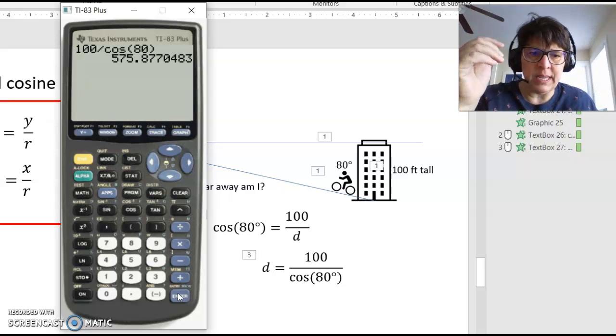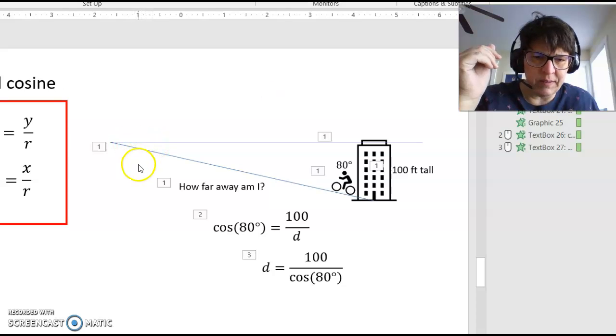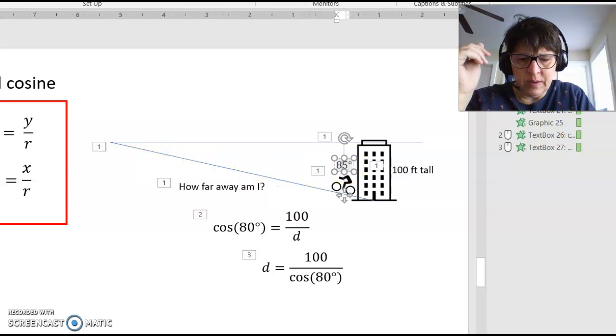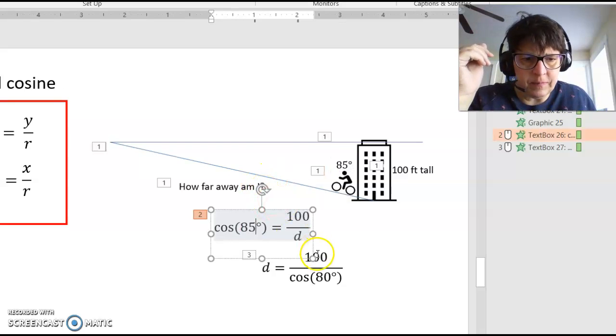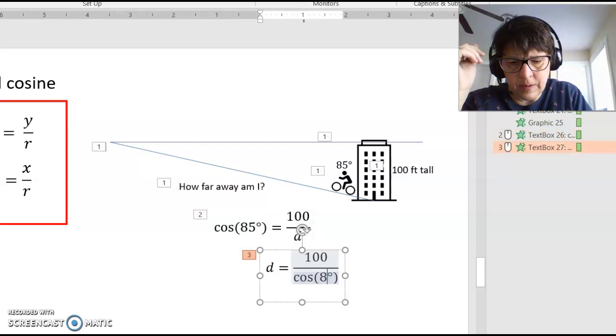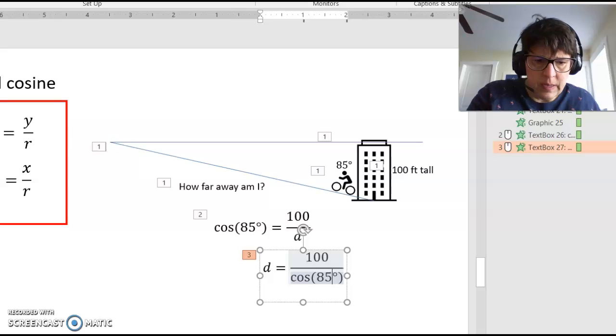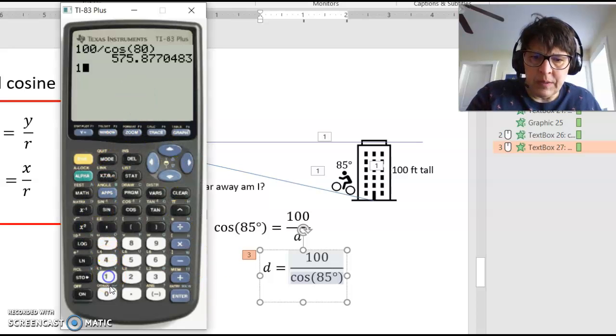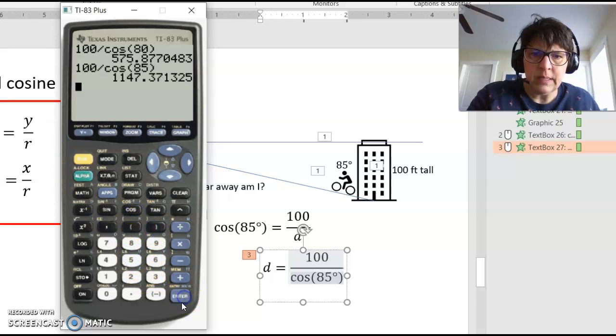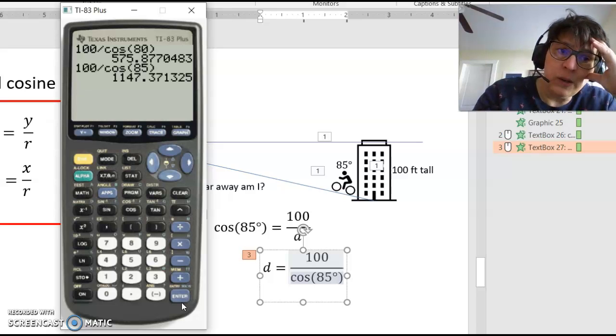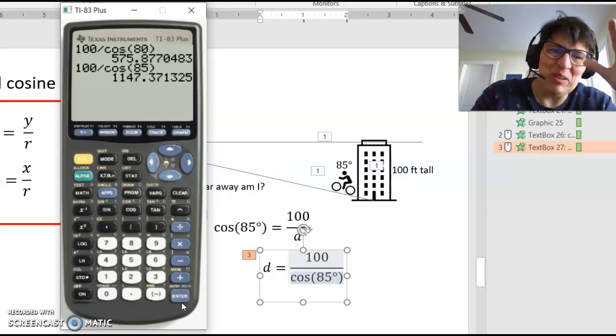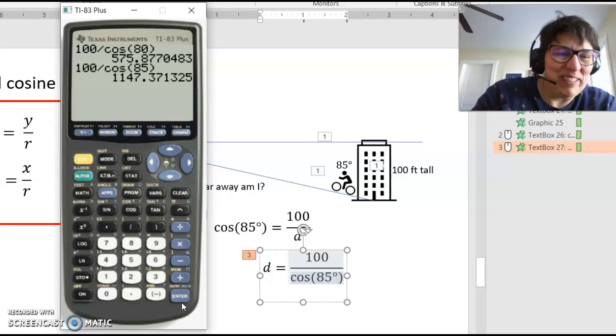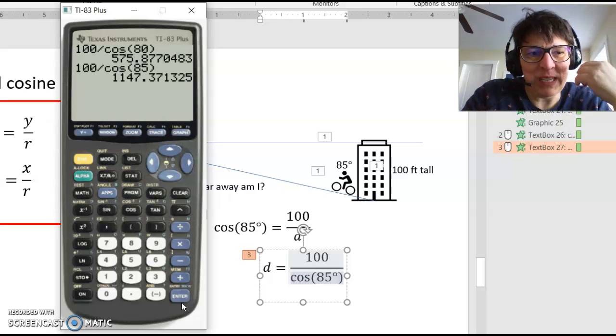Now let's say it had been a 5 degree angle here. So 5 degrees here would make it 85 right here. So 100 divided by cosine of 85 degrees. So it was half as steep and twice as long, more or less. With a little bit of rounding, but that seems pretty consistent.